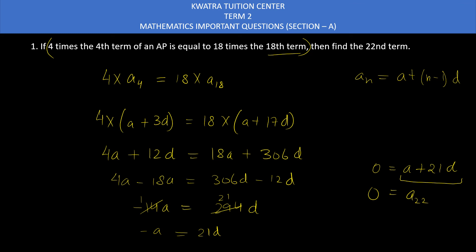That means the 22nd term is zero. So yes, this is the answer for the first one. Now moving to the second one.